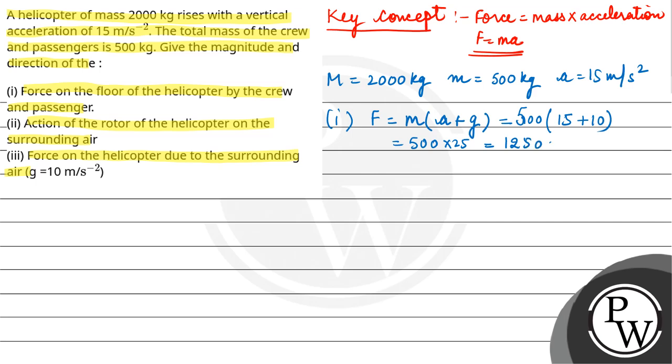Now in second part you have to find action of the rotor of the helicopter on the surrounding air, due to which the helicopter is uplifted. So this action will be in downward direction. So F is equal to mass, now here: